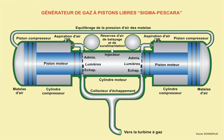A free piston gas generator is a free piston engine whose exhaust is used to power a gas turbine. It combines the functions of compressor and combustion chamber in one unit. These machines were quite widely used in the period 1930 to 1960 but then fell out of favor.